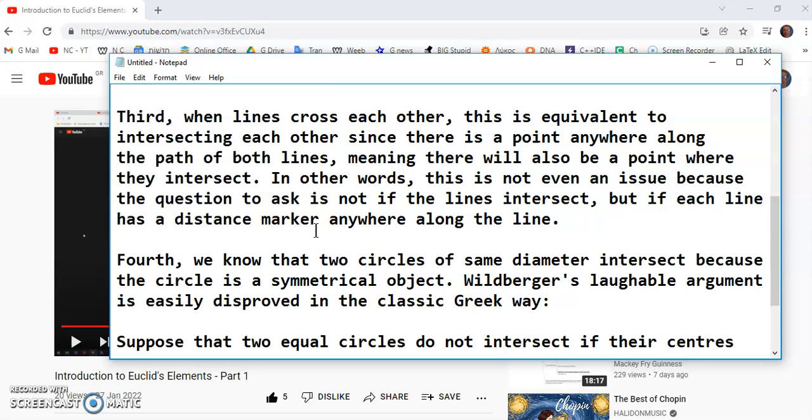In other words, this is not even an issue because the question to ask is not if the lines intersect, but if each line has a distance marker anywhere along the line. That's the question to ask.